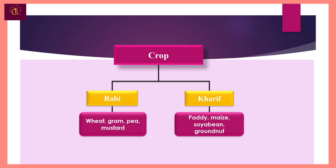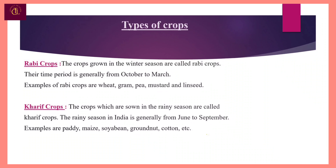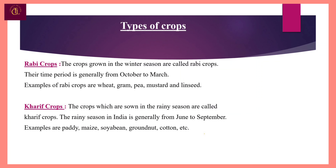Despite this diversity, two broad cropping patterns can be identified: the Rabi and the Kharif crops. So let's see the types of crops.